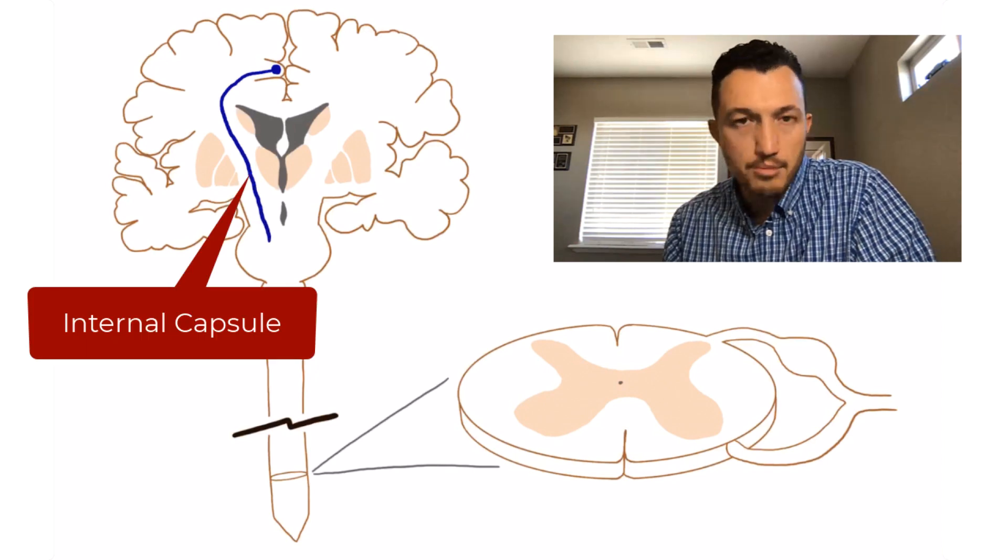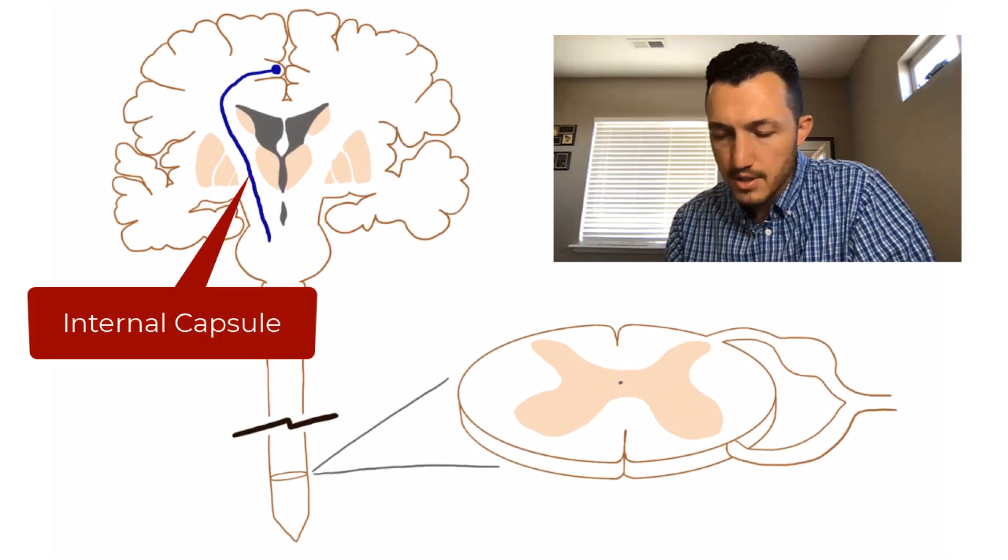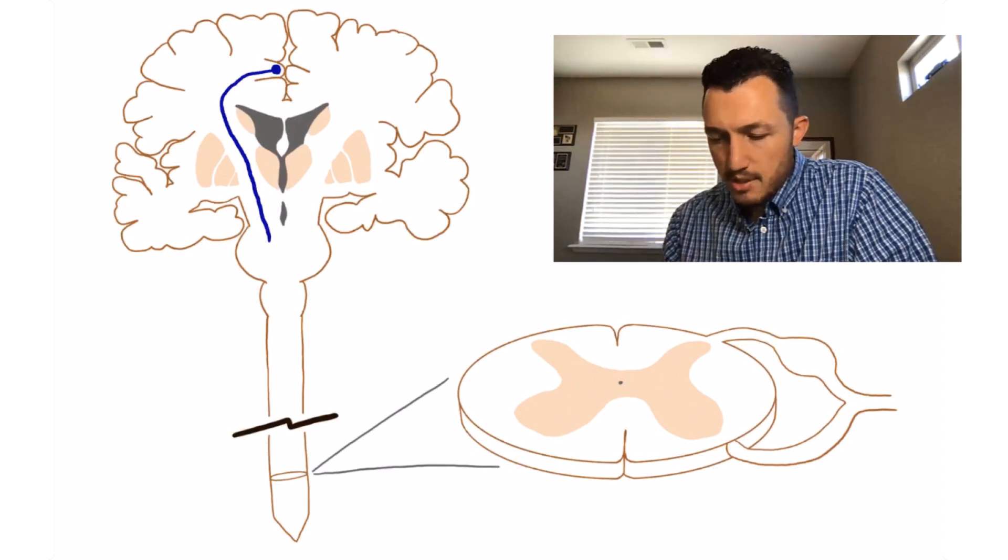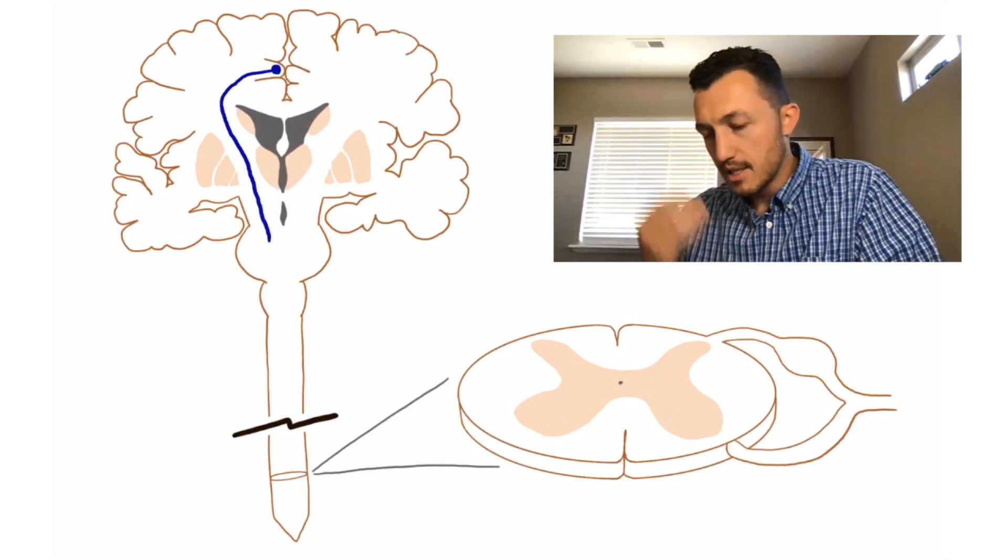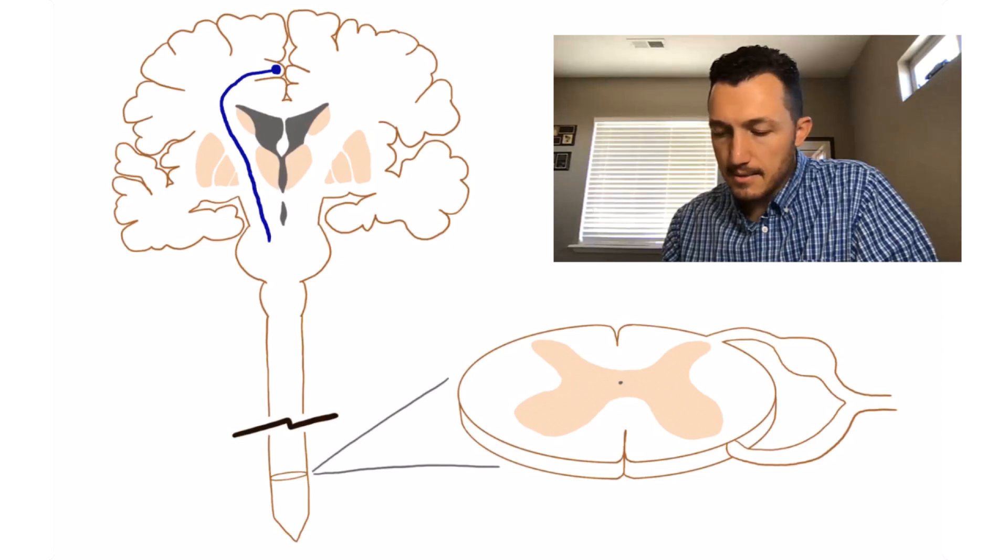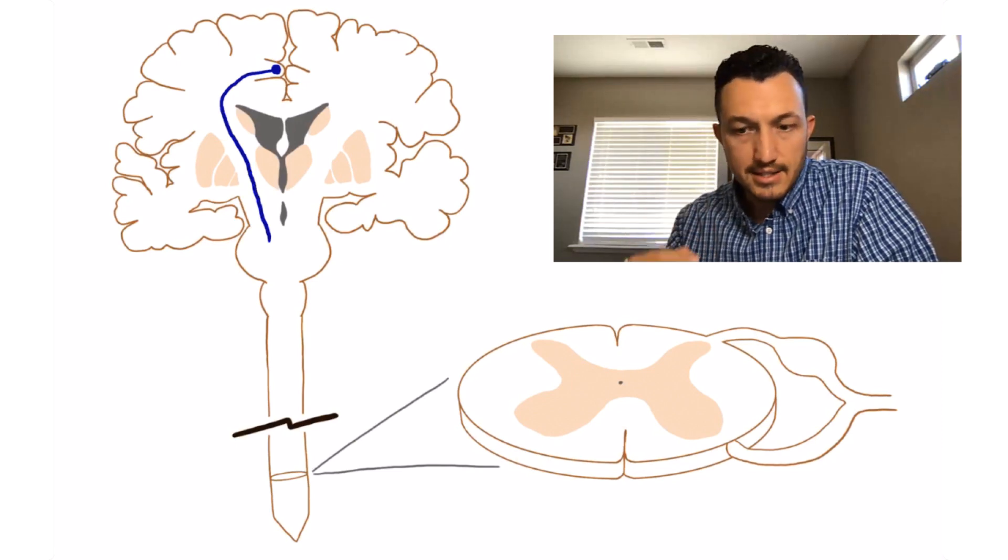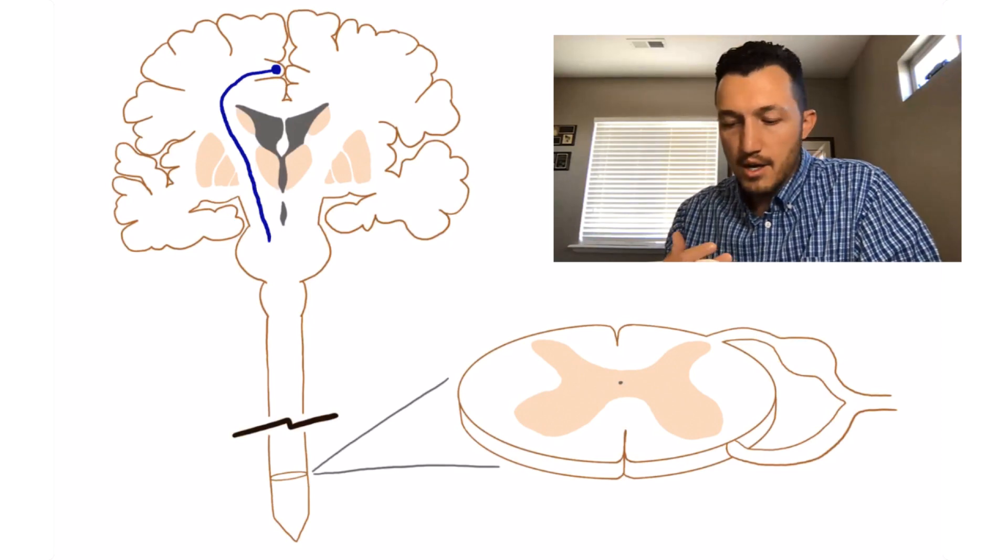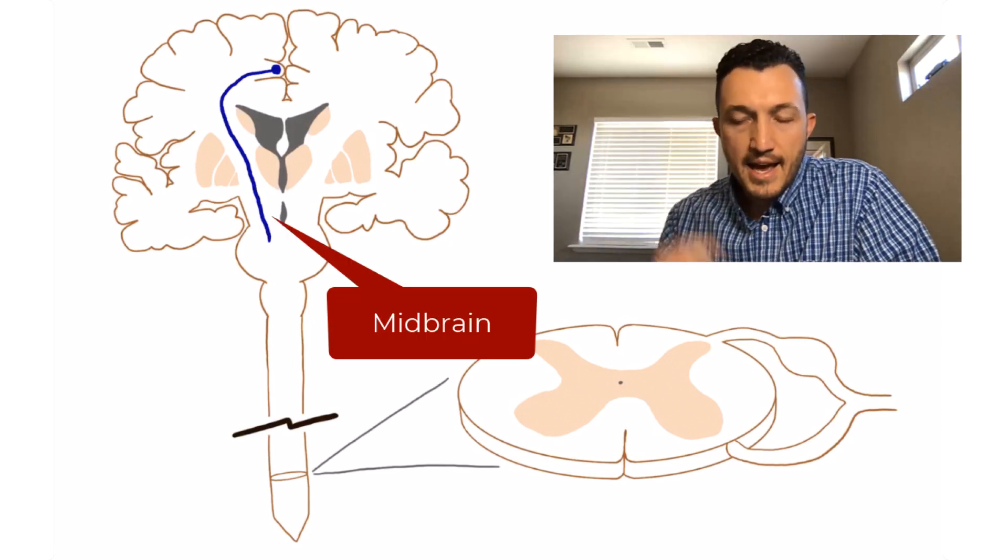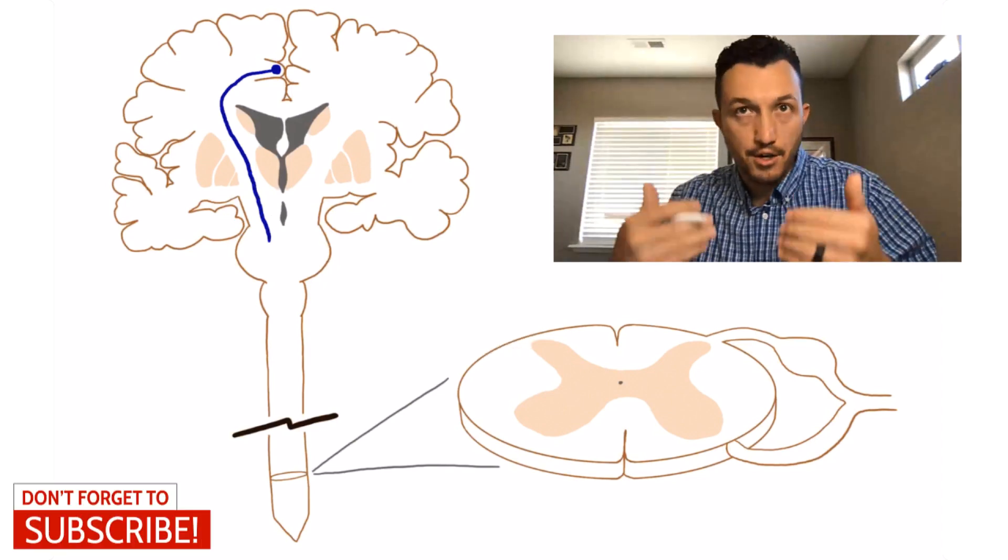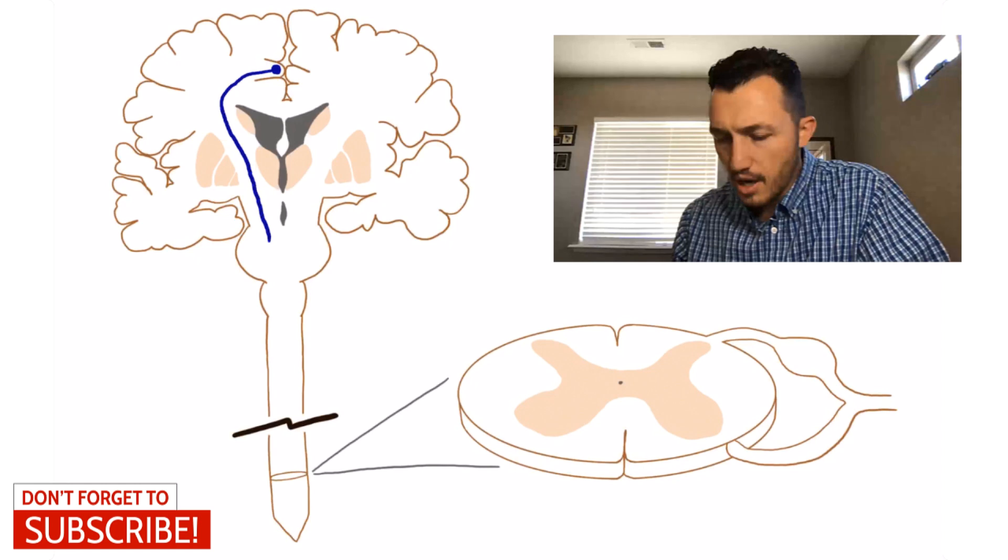The axon then is going to travel through the corona radiata down through the internal capsule. Remember, here's our internal capsule between some of those deep gray structures like the globus pallidus and the thalamus, all right? The different parts of the basal ganglia there with the putamen and globus pallidus and caudate. And so as this upper motor neuron axon descends down through the internal capsule, it also travels down through the midbrain like we've drawn here. And as it travels down through the midbrain, it's actually traveling in the anterior part of the midbrain called the cerebral peduncle.